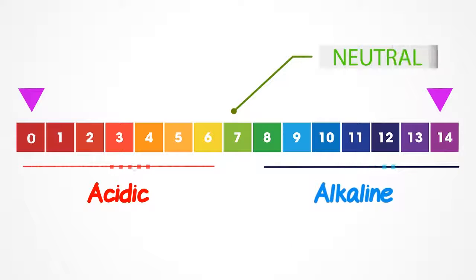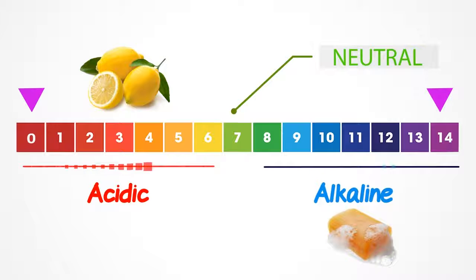Where 7 is considered neutral. Foods like lemons are acidic. Products like soap is a base. Variations of pH can impact the flavor of your lemons. High acidity levels in soap may damage your skin.